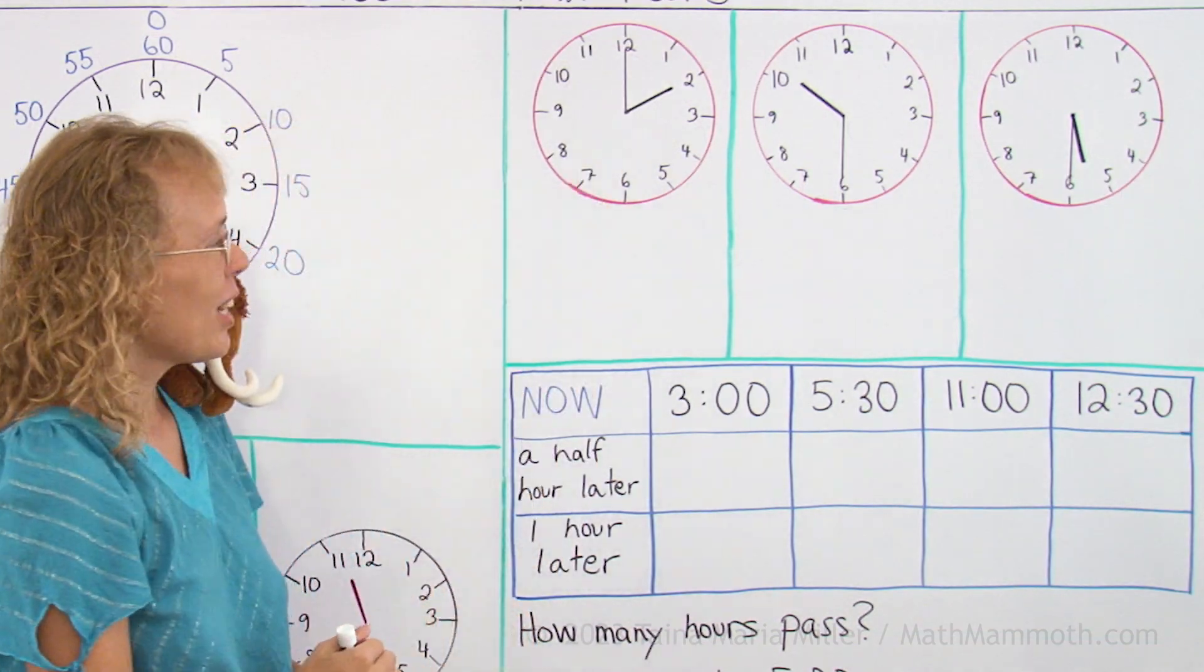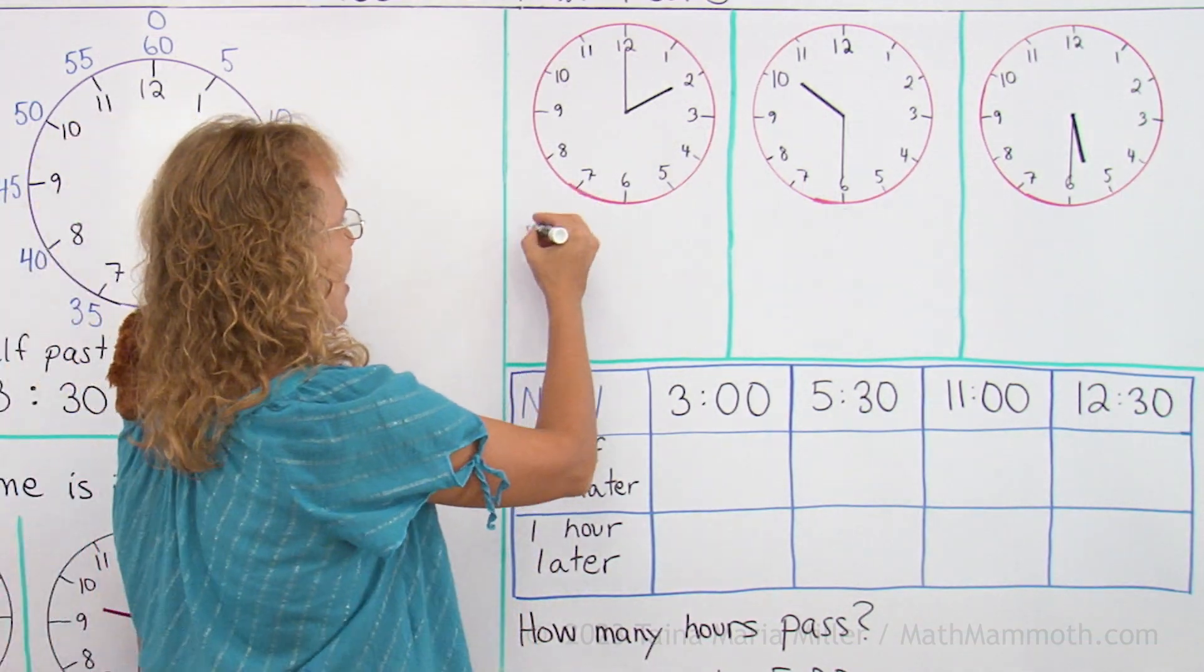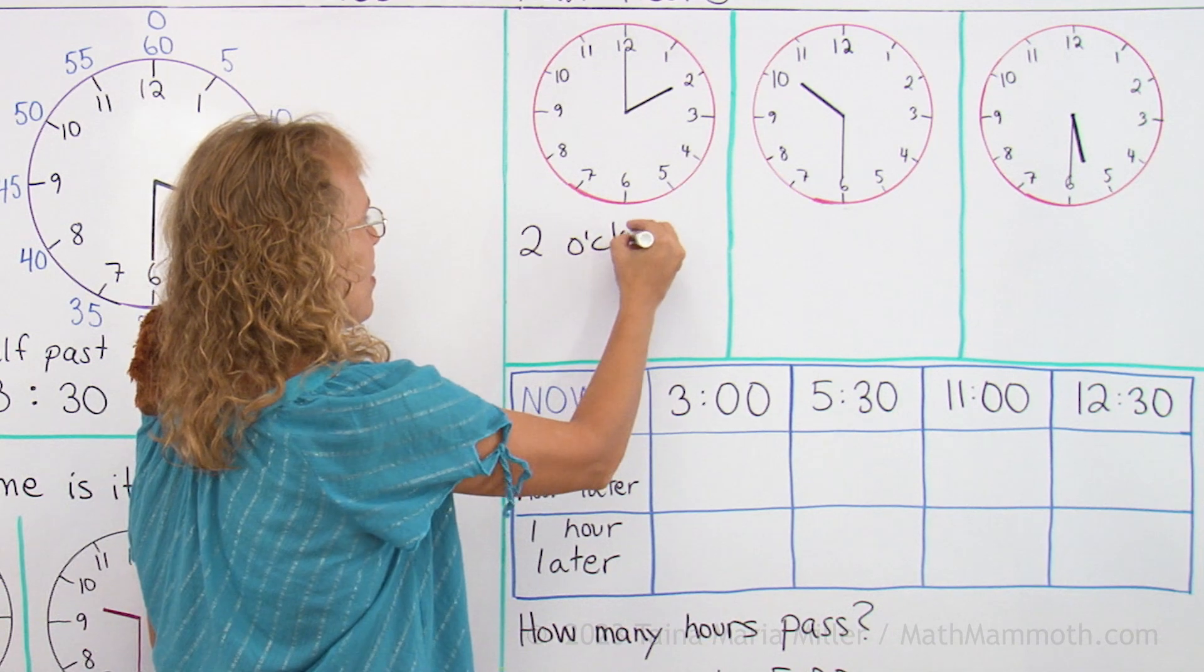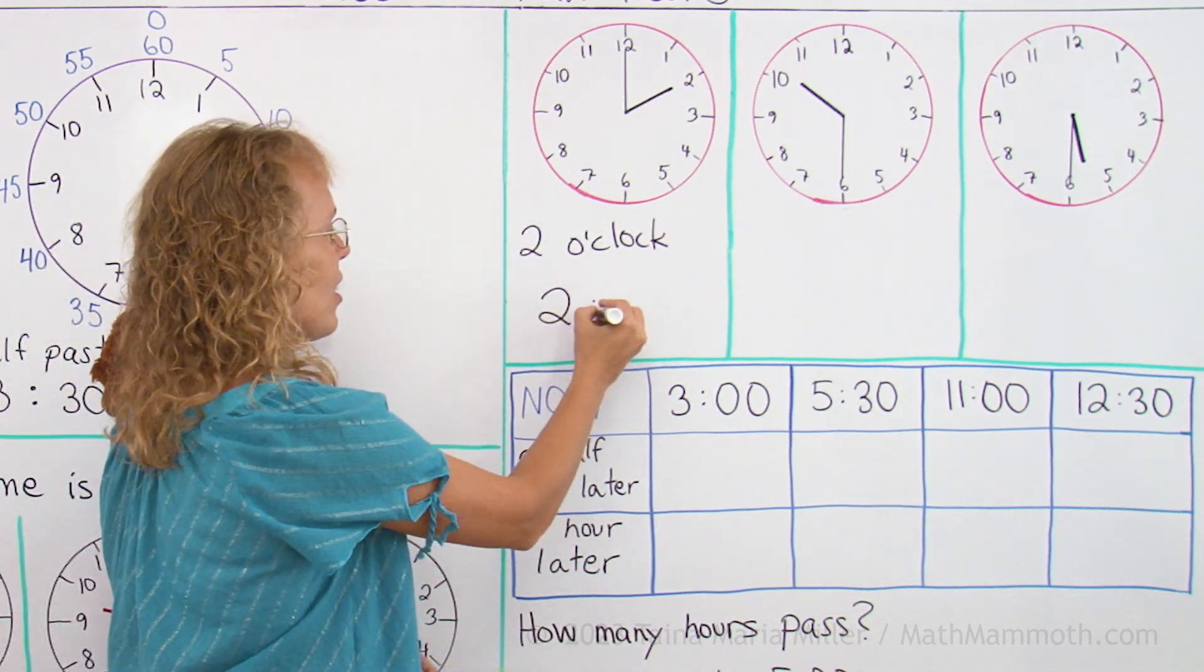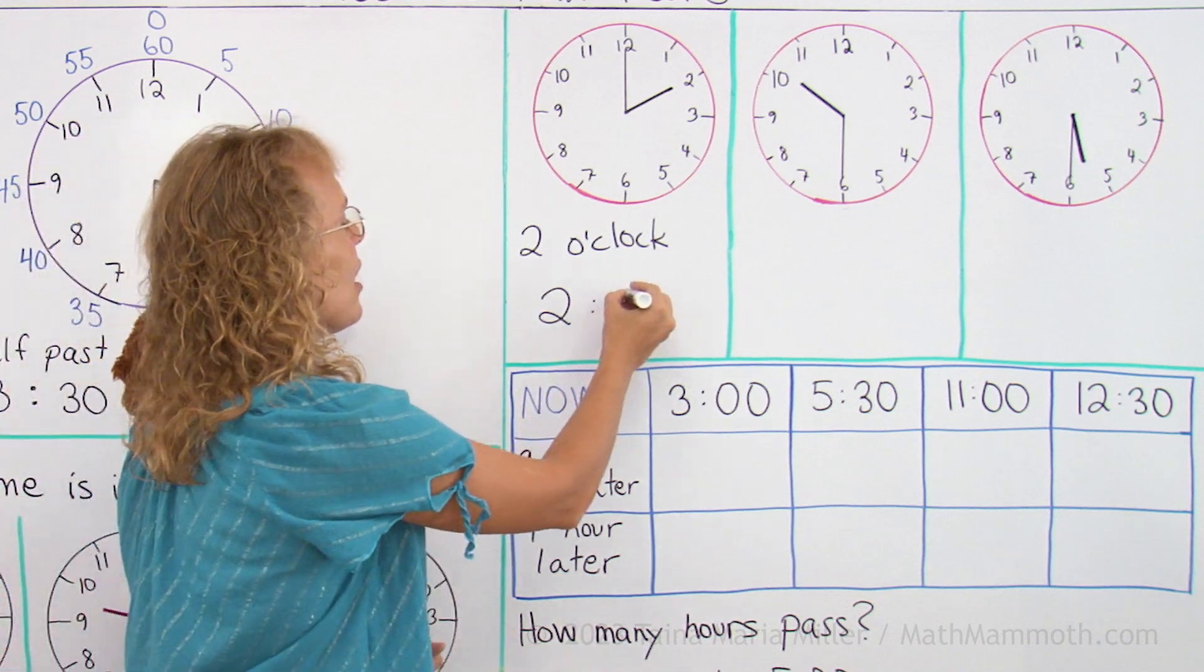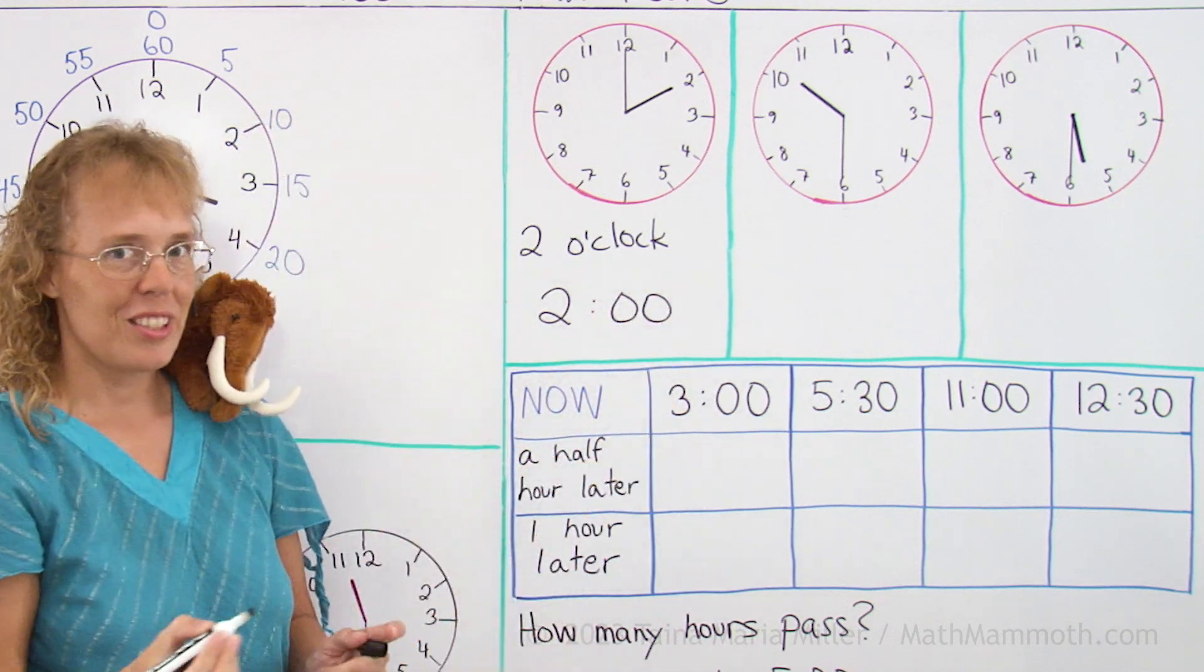Okay, over here we have exactly 2 o'clock. 2 o'clock. With numbers, we put 2 for the hours, then a colon to separate the minutes. And for the minutes, we put two zeros.